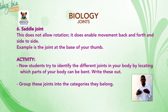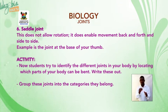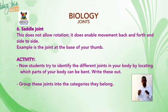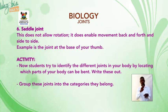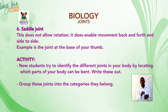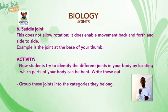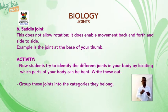Saddle joints do not allow rotation but do enable movement back and forth and side to side. An example is the joint at the base of your thumb.